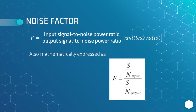The formula for noise factor is the input signal-to-noise power ratio over the output signal-to-noise power ratio. The symbol for noise factor is the letter F, and it is unitless. It is mathematically expressed as F = (S/N)_input / (S/N)_output — the signal-to-noise power input over the signal-to-noise power output. It is simply a ratio.